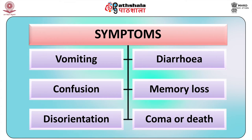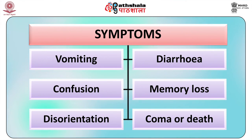The domoic acid is a neurotoxic agent. Acute symptoms include vomiting, diarrhea and in some cases are followed by confusion, memory loss, disorientation, coma or death.